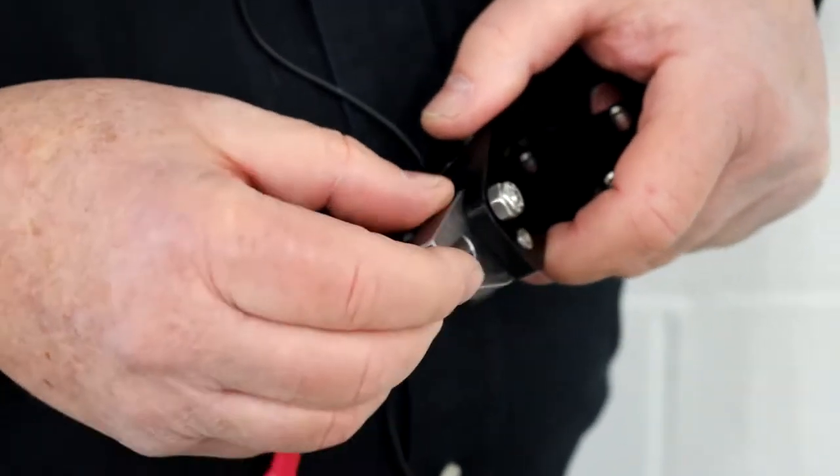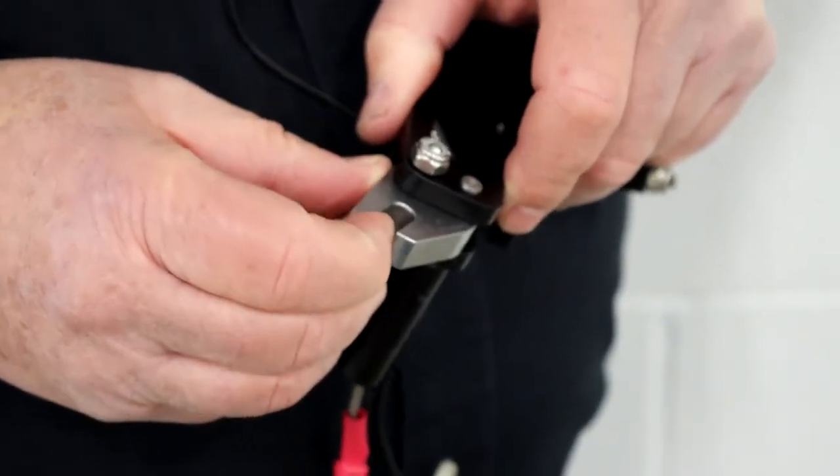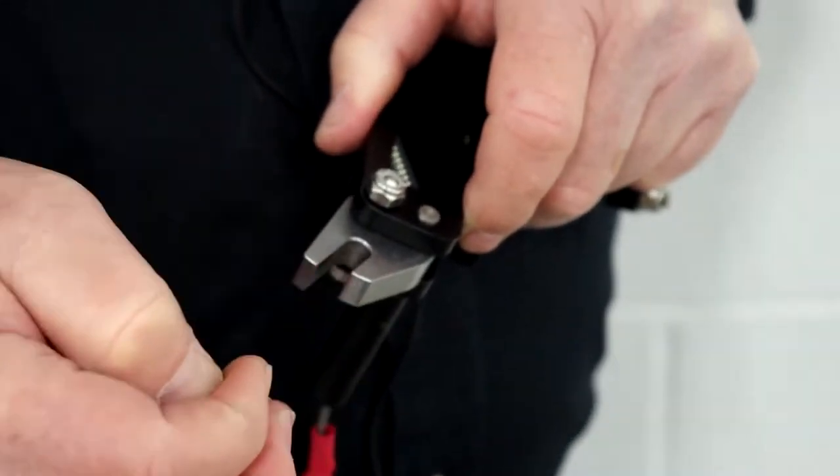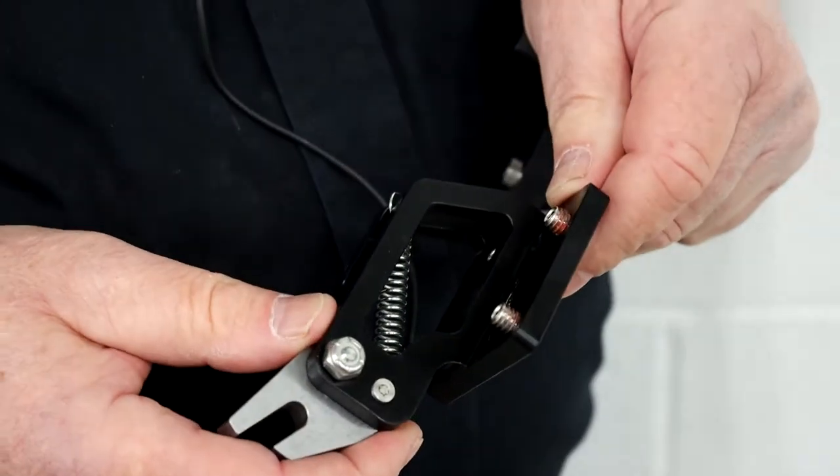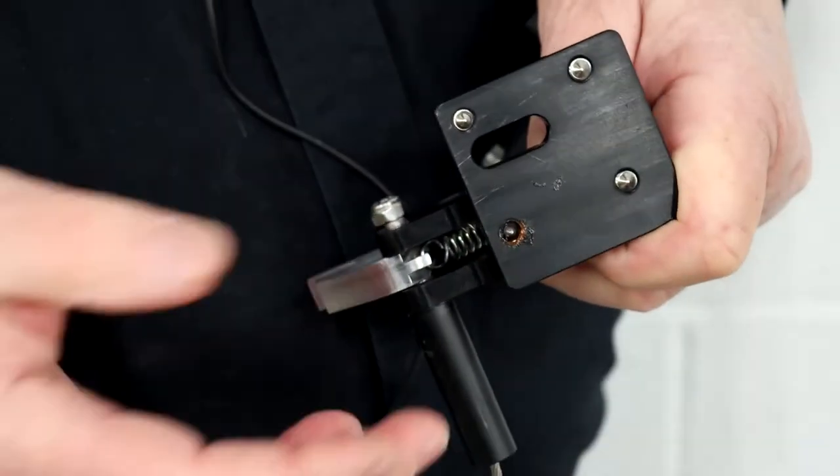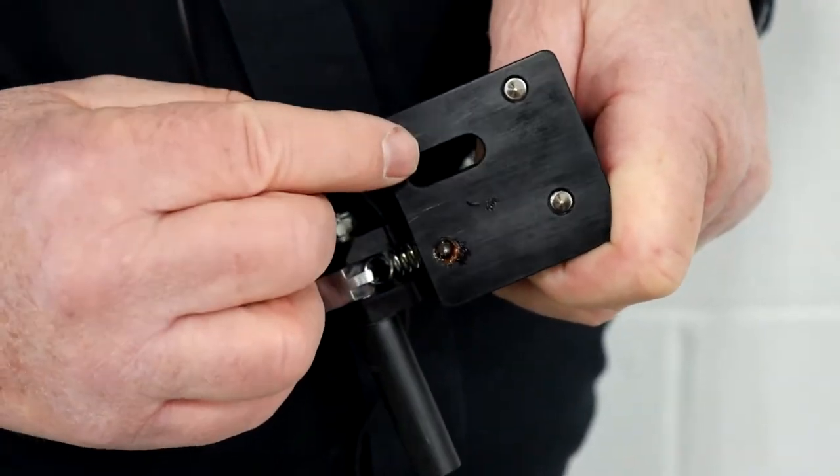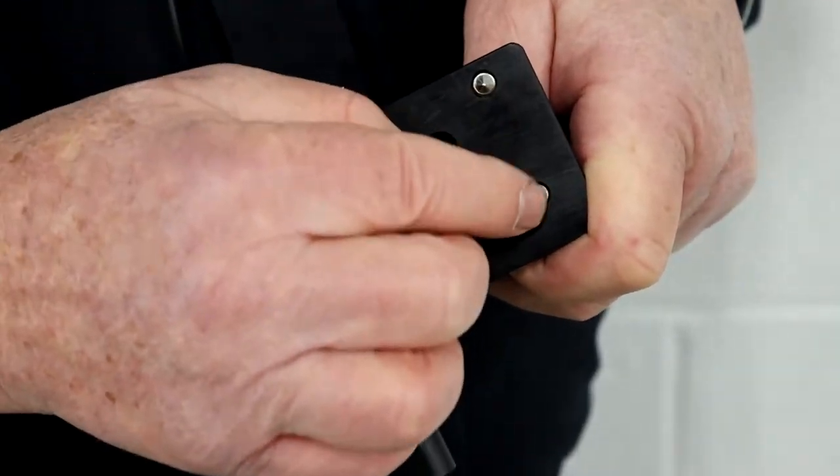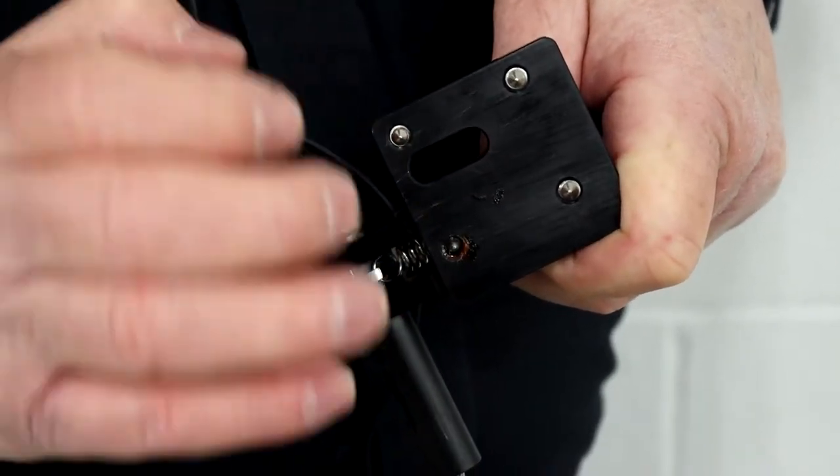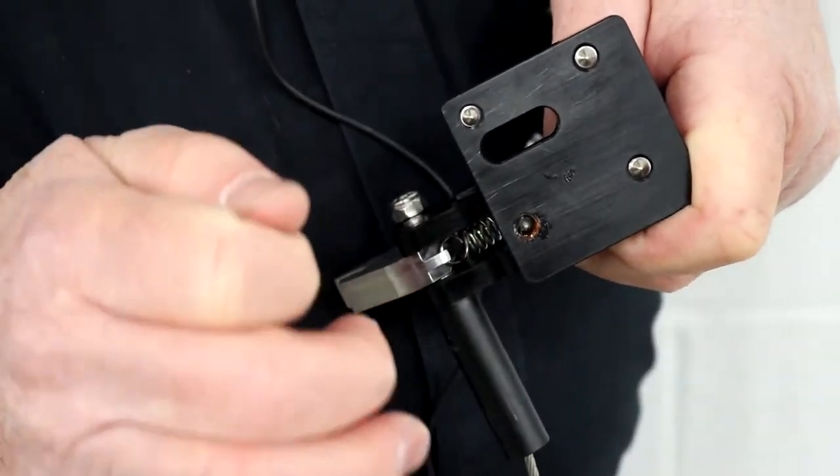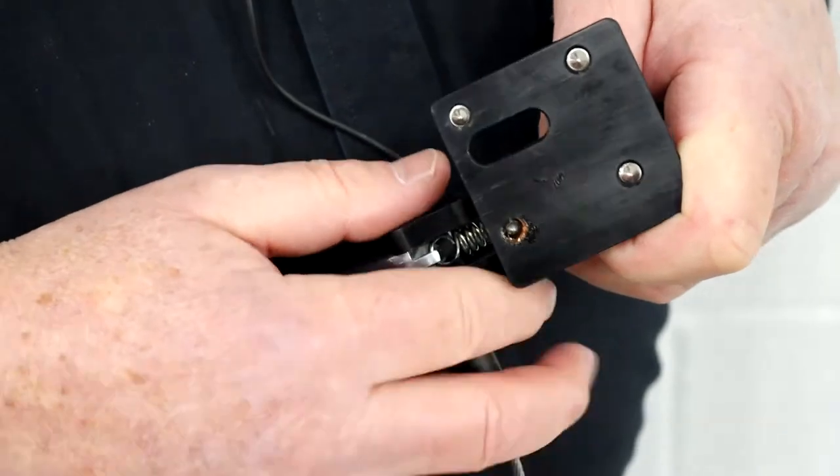Also with this larger cam in here, it reduces the possibility of disengagement. A couple of the other features are these pointed set screws. They're designed to dig in a little bit into the greenhouse to prevent the body from twisting.